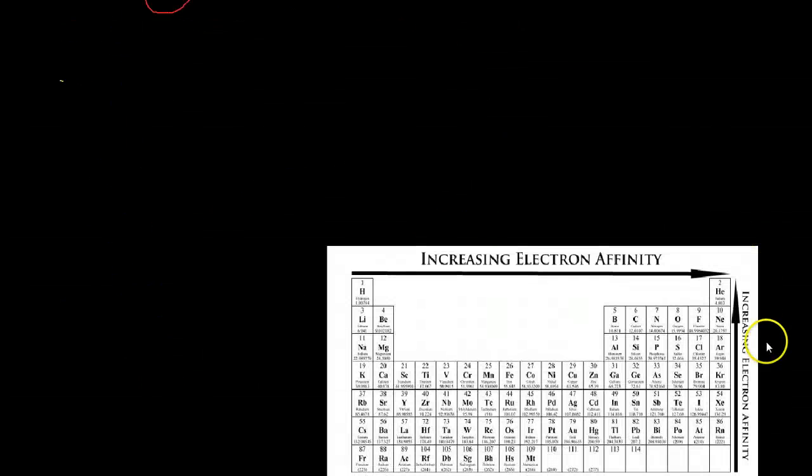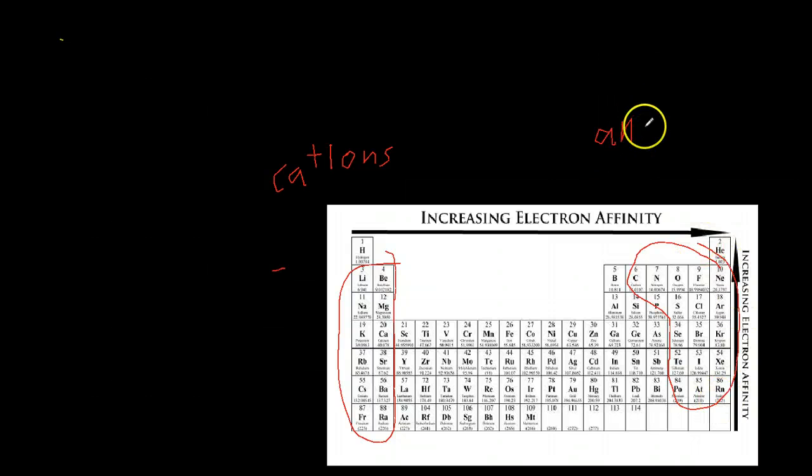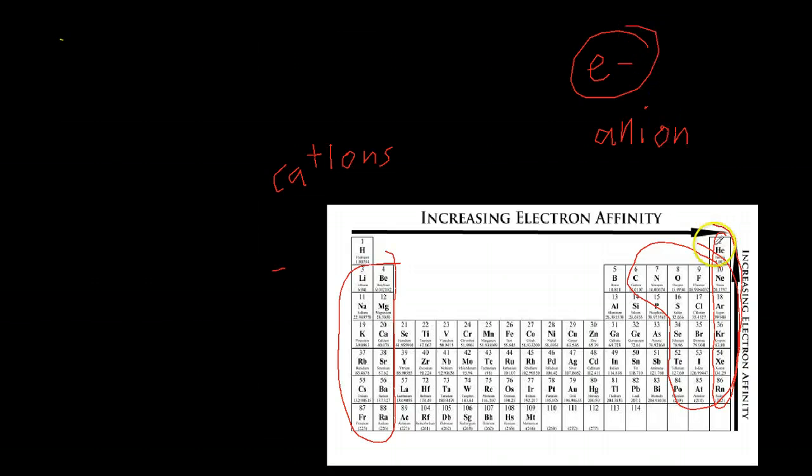Now, if we go down and look at our table, what you'll find is that these metals over here will tend to form cations because they have a very low electron affinity, which means they lose electrons very easily, and the nonmetals, which are over here, will tend to form anions because they are very close to the stable noble gas formation over here on the far right. So what they want to do is add one more or two more, or however many more electrons, to get to that stable formation.